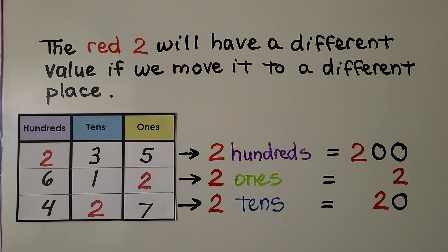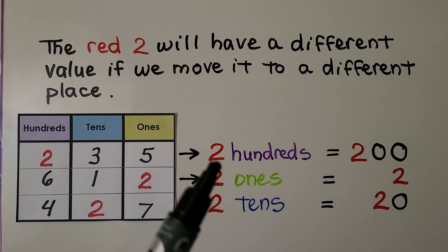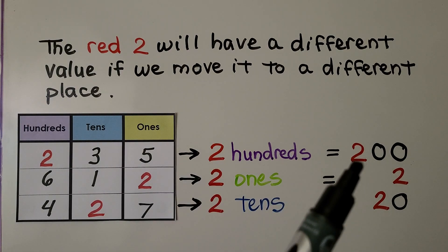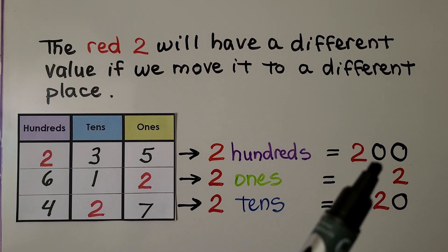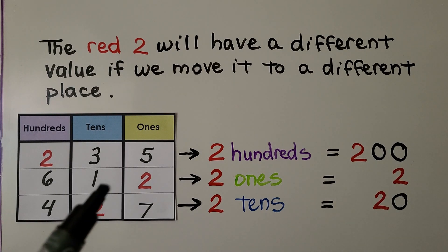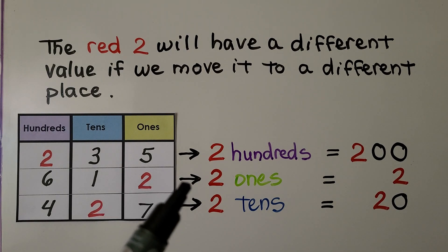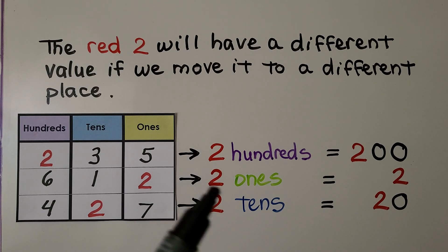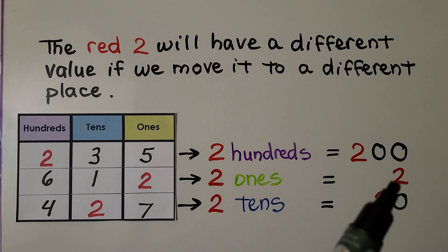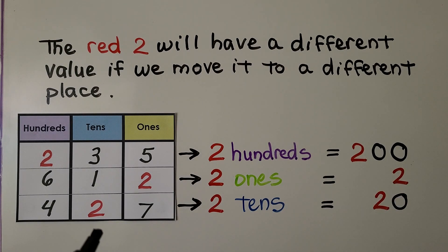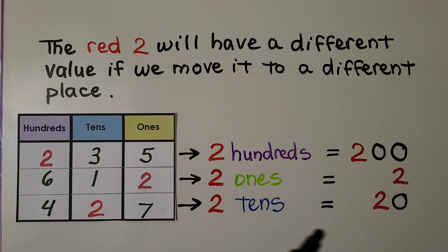The red 2 will have a different value if we move it to a different place. Here it's in the hundreds place — that's two hundreds, we write it as two hundred. Here it's in the ones place — its value is two ones, we just write a two. Now the red 2 is in the tens place — that's two tens, equal to 20.